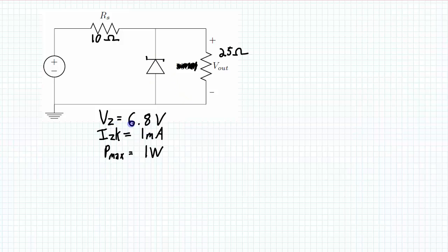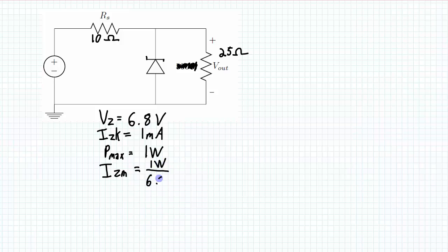This particular Zener diode has a Zener voltage of 6.8 volts. It requires a minimum of 1 milliamp through it to put it into regulation at the 6.8 volt Zener voltage. And it has a maximum power dissipation of 1 watt. This maximum power means there's also a maximum current associated with it — we'll call it IZM — which is equal to the current at that 1 watt: 1 watt divided by 6.8 volts gives 147 milliamps. So the Zener diode requires at least 1 milliamp but no more than 147 milliamps to be considered to be regulating.